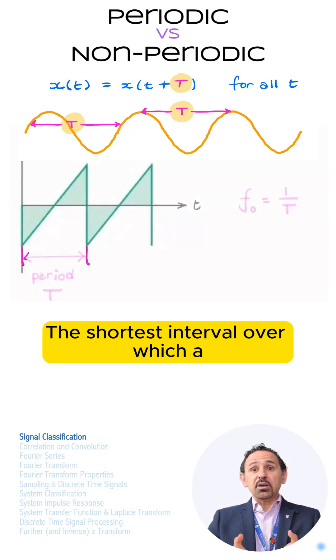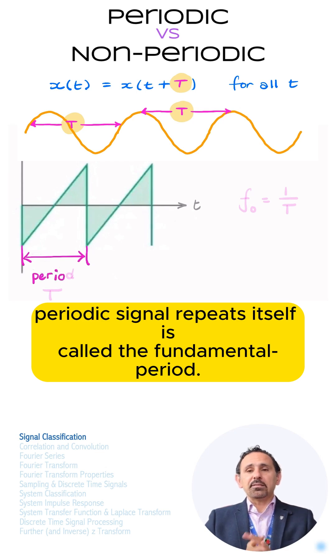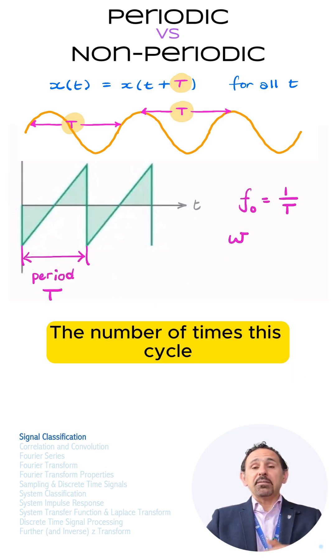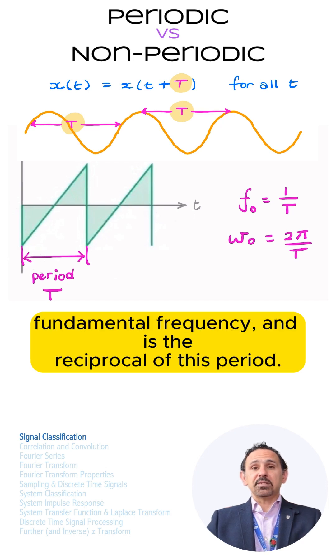The shortest interval over which a periodic signal repeats itself is called the fundamental period. The number of times this cycle repeats per second is the fundamental frequency, and is the reciprocal of this period.